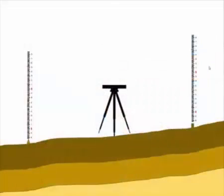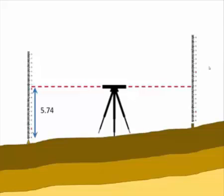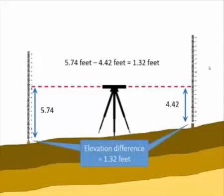Now here's an important distinction. The reading we take on this type of level rod is not an elevation. It is merely a vertical distance between our instrument line of sight and the surface on which the rod sits. By taking two rod readings we can find the difference in elevation between two points. In this case that elevation difference is 1.32 feet.